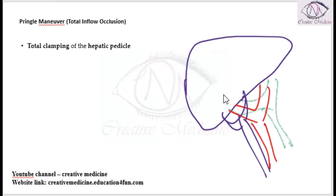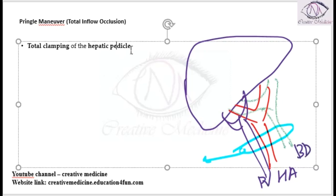It is something like this. We have three things. This together we call the portal triad. So, we have to clamp it using the clamp here. When you clamp it, hepatic artery is blocked, portal vein is blocked and bile duct is blocked. That is Pringle's maneuver where you will do total clamping of hepatic pedicle.